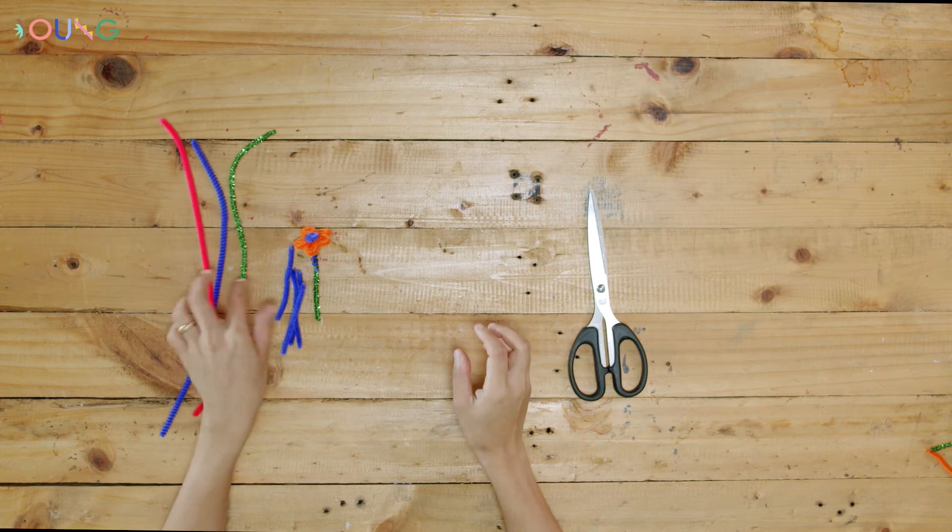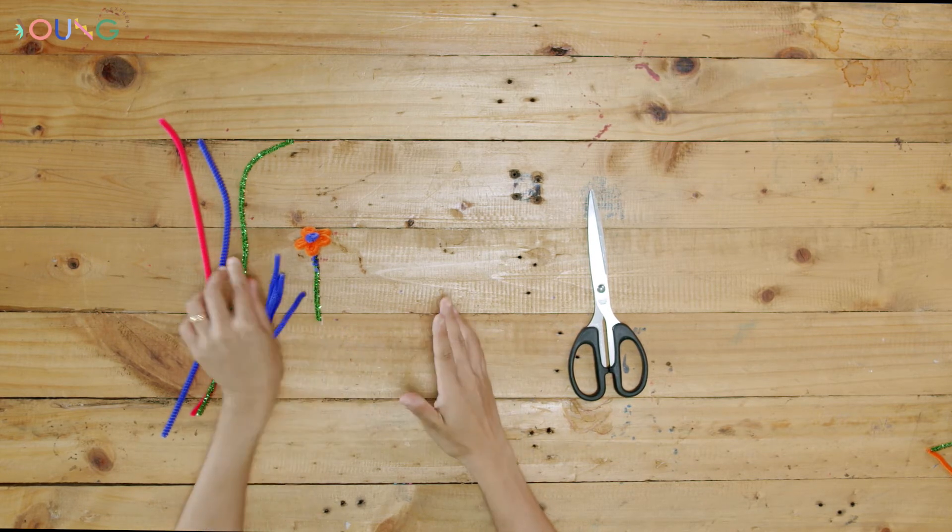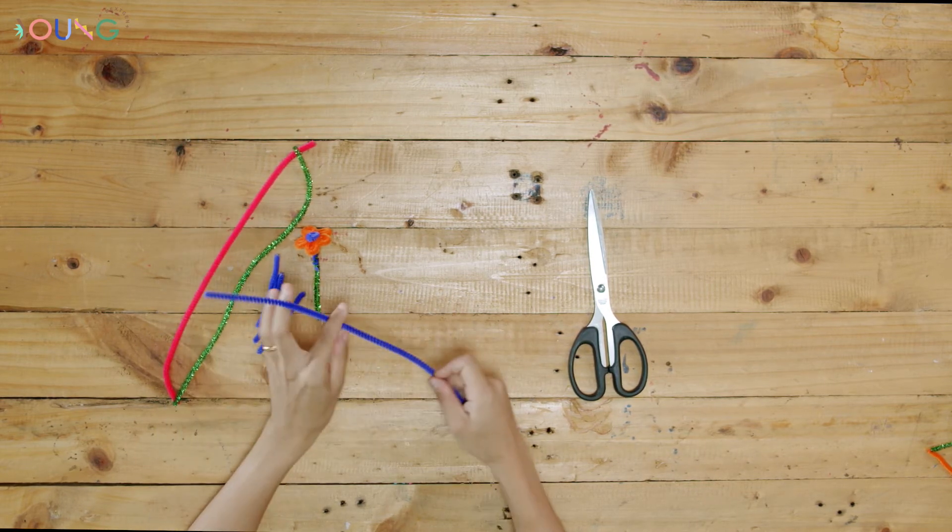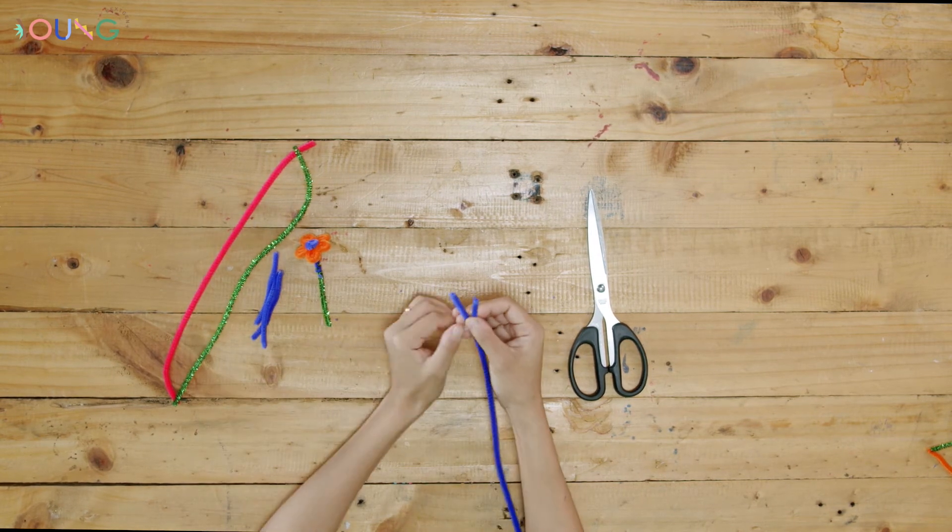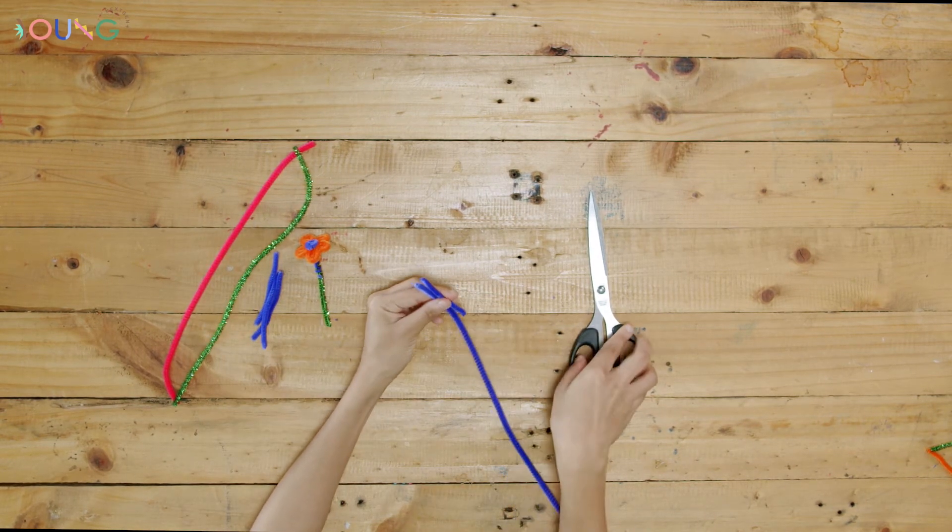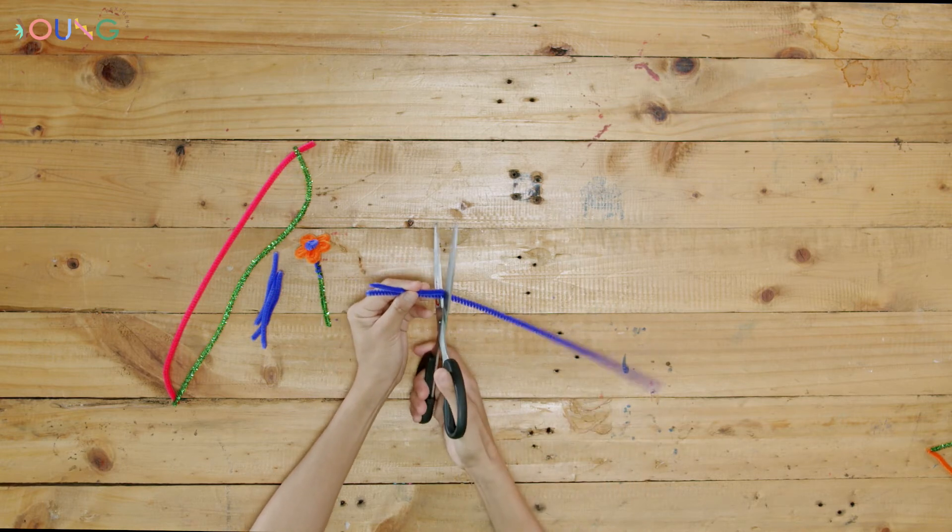But you need five of them, so take another pipe cleaner and cut one more of the short piece. I'm using the previous cut as an example for the size. Now you have five of them!